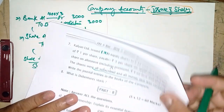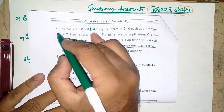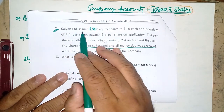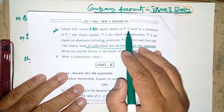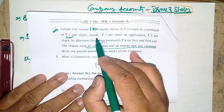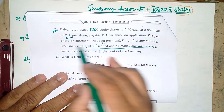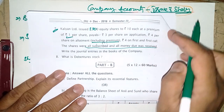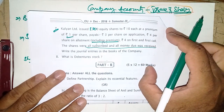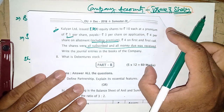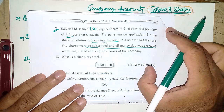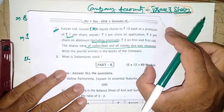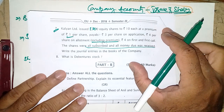We will see the Usmani University 2018 question paper, where question number seven was asked for four marks. Kalyan Limited issued 1000 equity shares of rupees 10 each at a premium of one rupee per share, payable: three on application, four on allotment which includes premium, and rupees four on first and final call. These shares were all subscribed and money due was received — there are no call arrears scenarios, all the money was received.